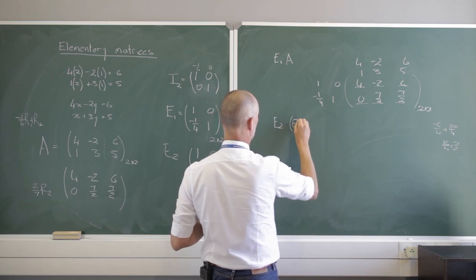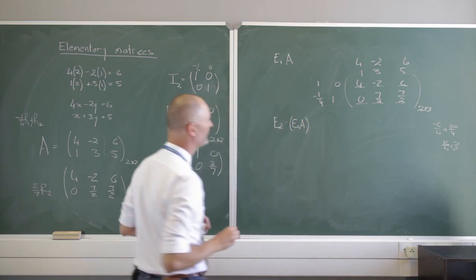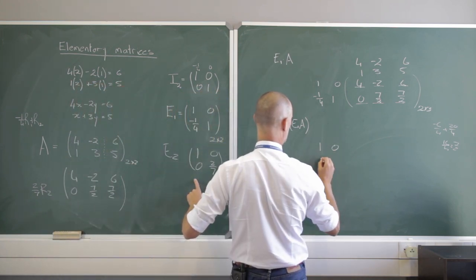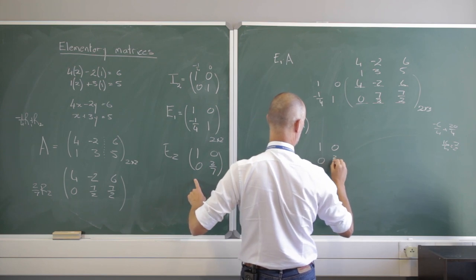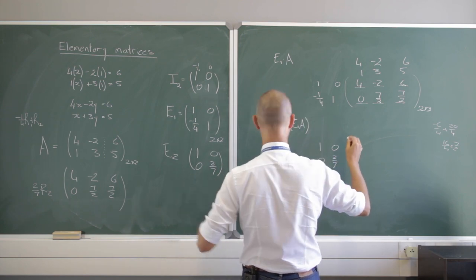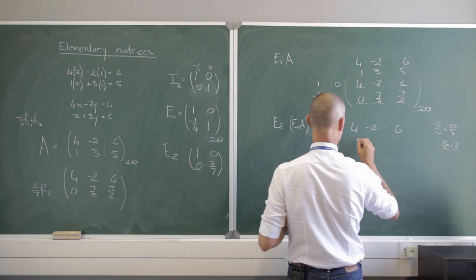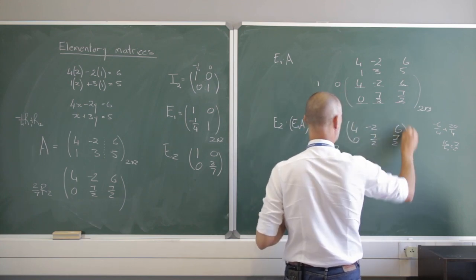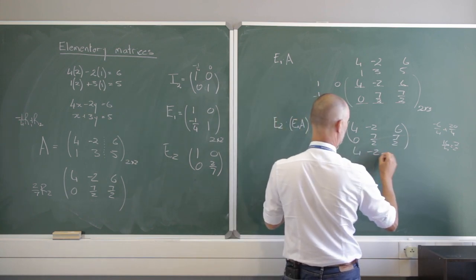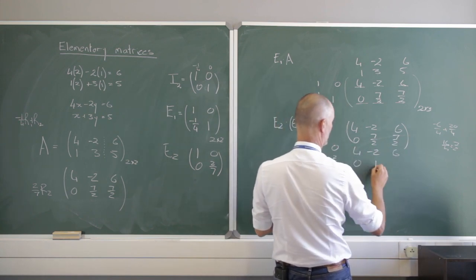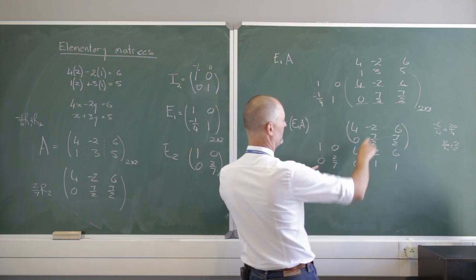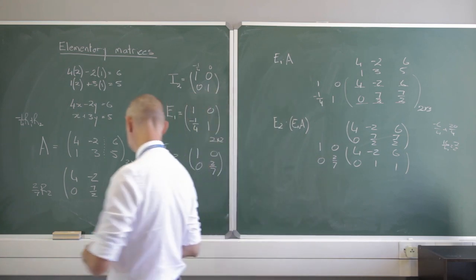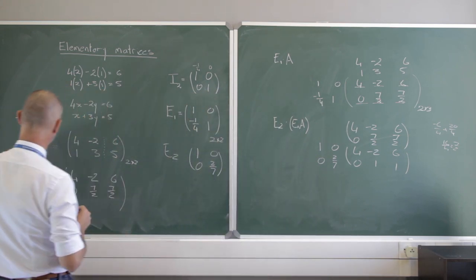Let's compute E2 times (E1·A). We have [1, 0; 0, 2/7] multiplied by [4, -2, 6; 0, 7/2, 7/2]. The first row stays the same, and for the second row multiplying by 2/7 gives [0, 1, 1]. So the new matrix is [4, -2, 6; 0, 1, 1].